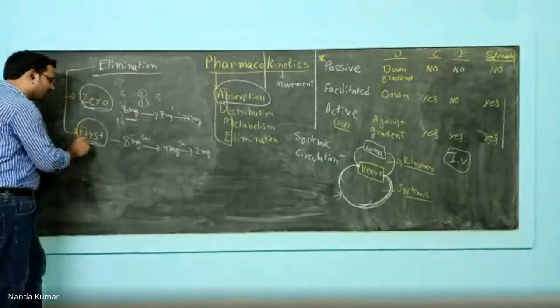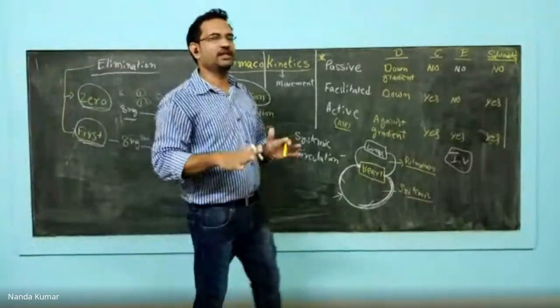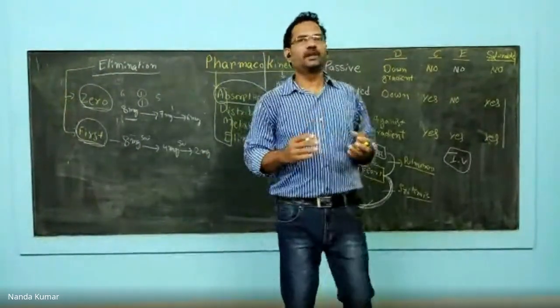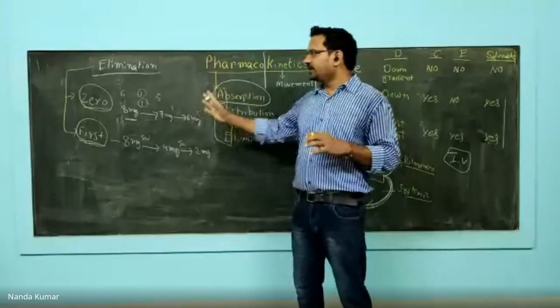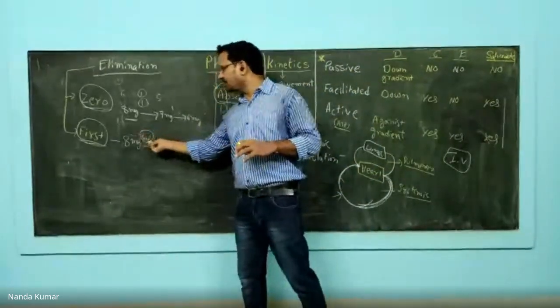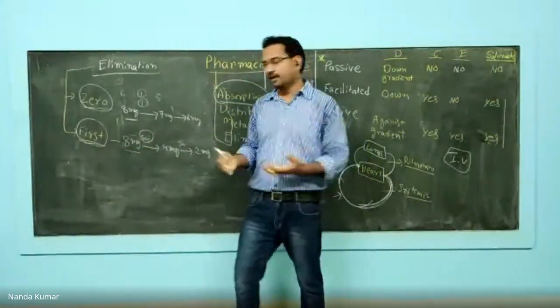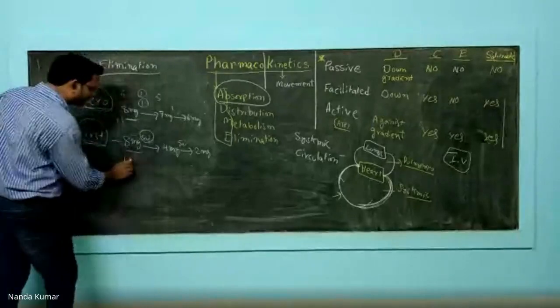So you have constant amount getting eliminated in zero-order, but constant fraction is getting eliminated in first-order. Constant fraction is known as first-order kinetics. Majority of drugs follow first-order kinetics.